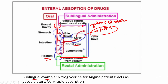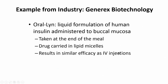An example of sublingual delivery is nitroglycerin delivered to angina patients — it provides very rapid absorption because it is a very small molecule. Another example is a product by Generex Biotechnology called Oral-lyn, which is an insulin formulation taken at the end of a meal. The drug is carried in lipid micelles, held in the mouth, and gives a very similar efficacy to IV injections.